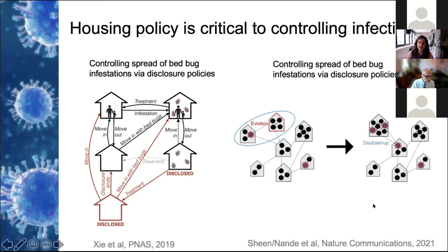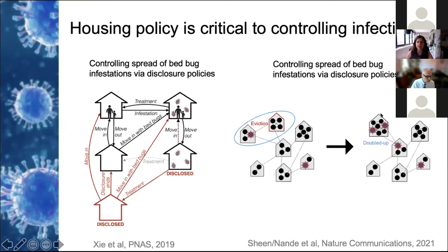For COVID-19, we know that households are a major site of transmission, and millions of American households fell behind on rent over the course of this pandemic and have been at risk of eviction. Evictions could actually increase the risk of infection by forcing individuals into more crowded housing situations where infection is more likely to spread and spill over to other households in the community. We were able to estimate how many infections are averted by eviction bans, which helped local legislatures and the CDC justify putting these measures in place over the past year.